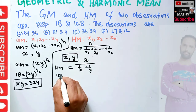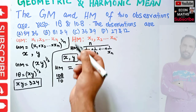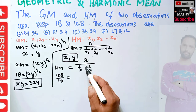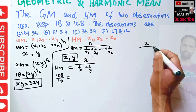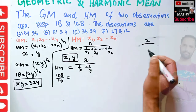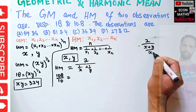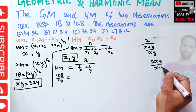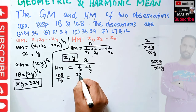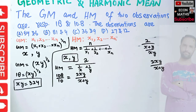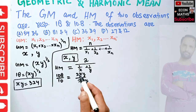The harmonic mean is given as 10.8, which we can write as 108/10. Simplifying the expression 2 divided by (1/X + 1/Y), we combine the fractions to get (X + Y)/XY in the denominator, so the harmonic mean becomes 2XY/(X + Y). Setting this equal to 108/10 gives us our equation.